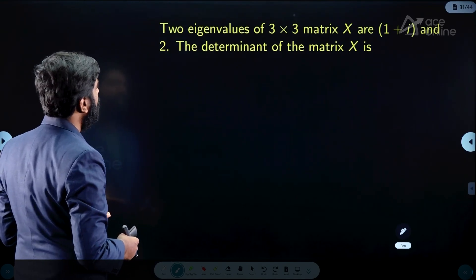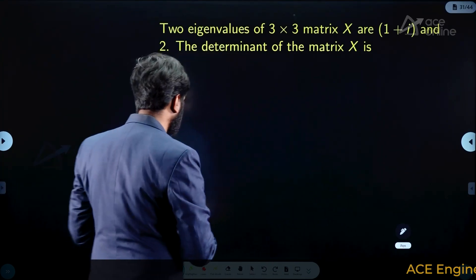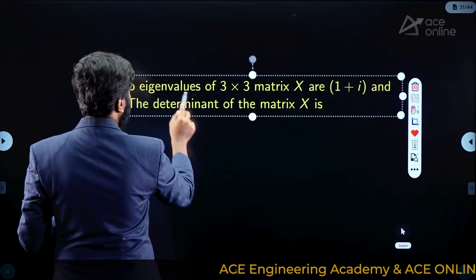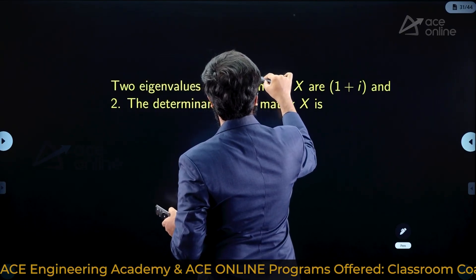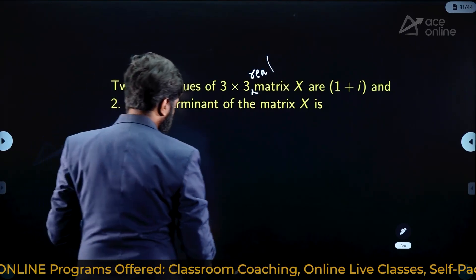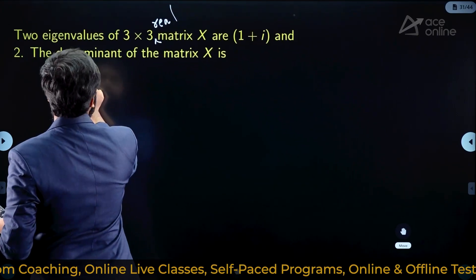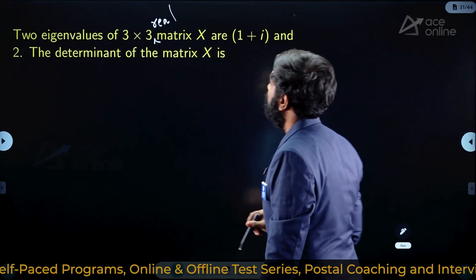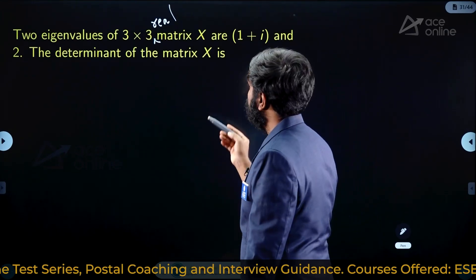They should have given the question this way: two eigenvalues of a 3×3 real matrix X are... When the matrix entries are real numbers, we have an interesting property. This word 'real' is missing in the question paper, because without it, the question cannot be solved.